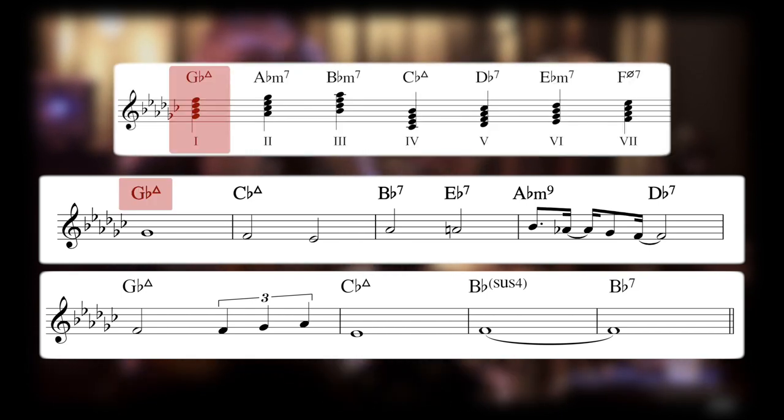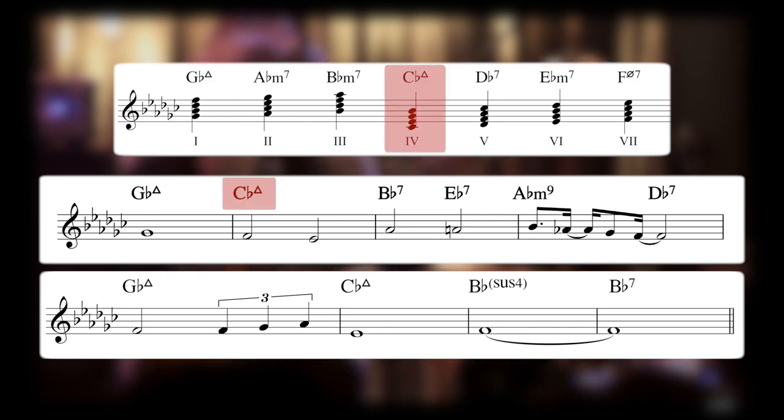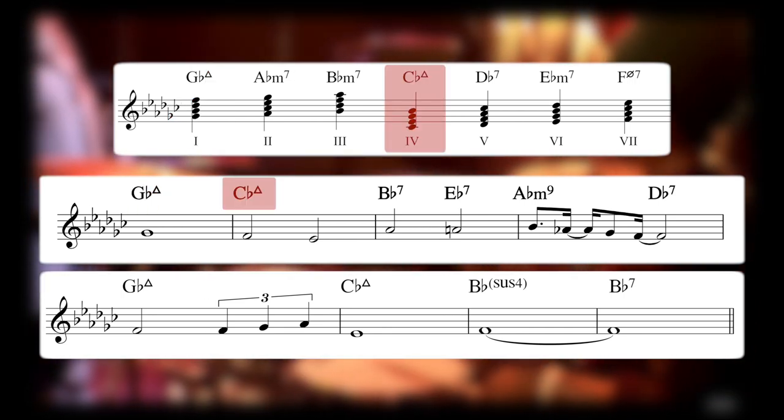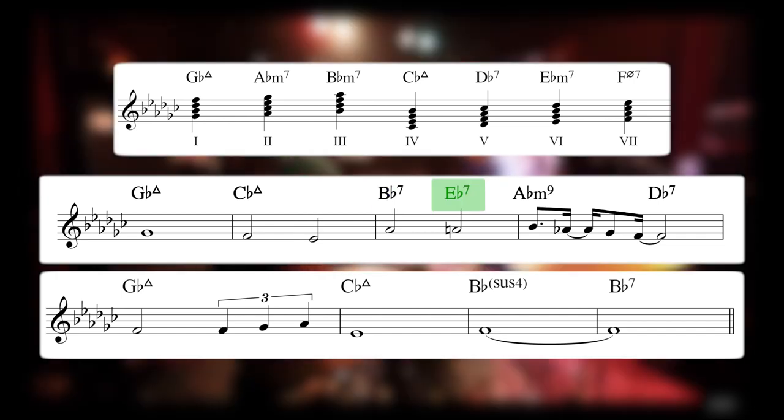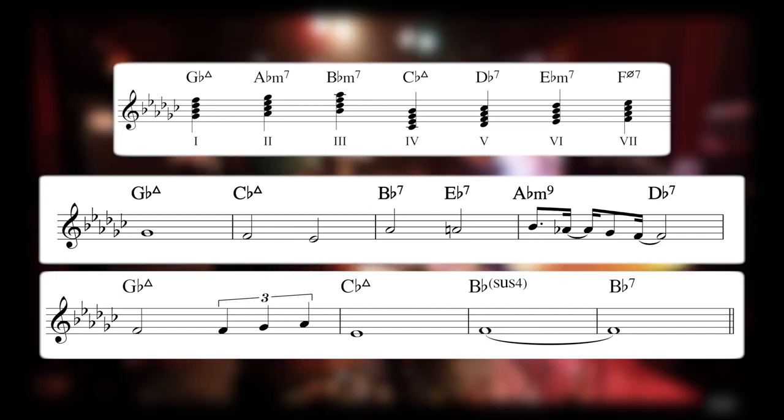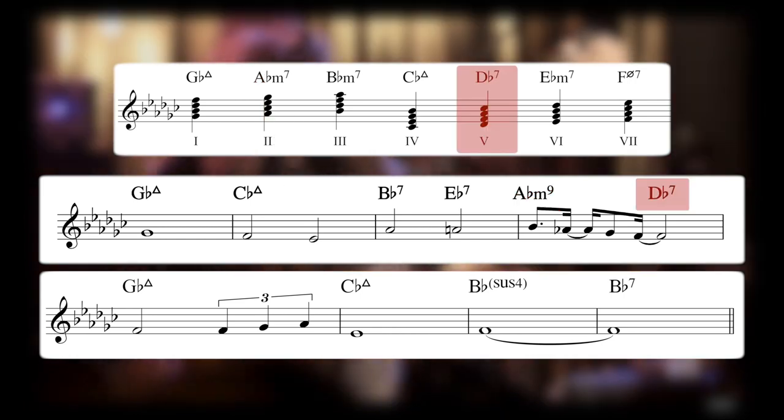We have a G flat major chord which is the 1, C flat major as the 4, then we have a B flat 7 which is a secondary 5, E flat 7 which is a secondary 5 and then a 2-5, so A flat minor 7, D flat 7.